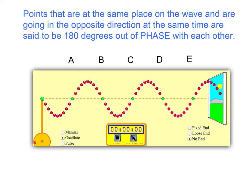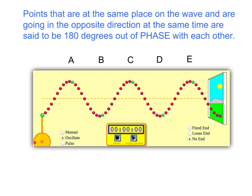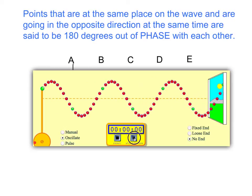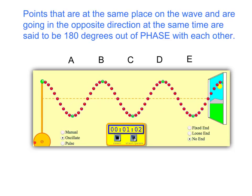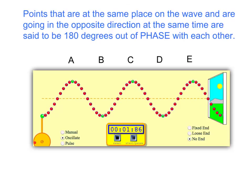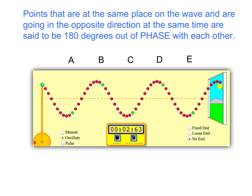Now we want to concentrate on A and B to illustrate that particles can be 180 degrees out of phase. As we let the wave run, notice that A goes up while B goes down, and B goes up while A goes down — they alternate, always doing the opposite. So we say that A and B are 180 degrees out of phase with each other.